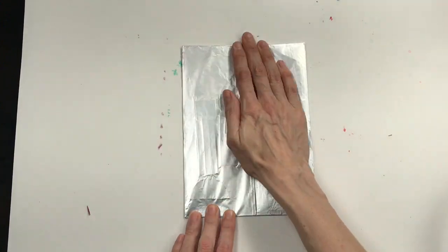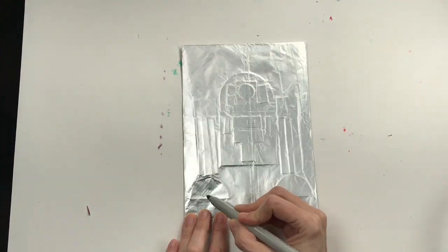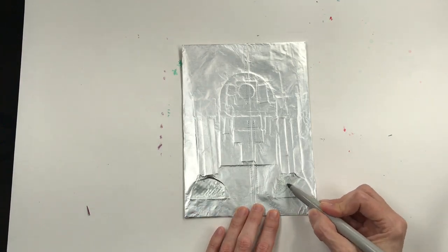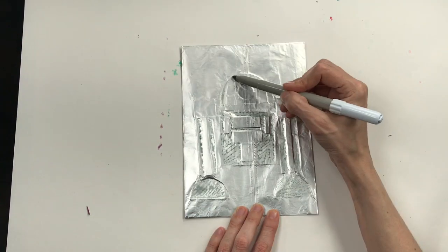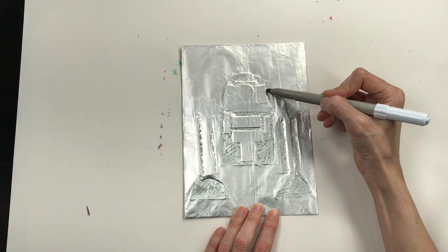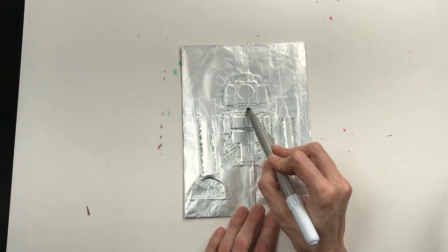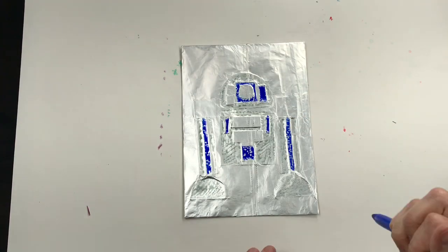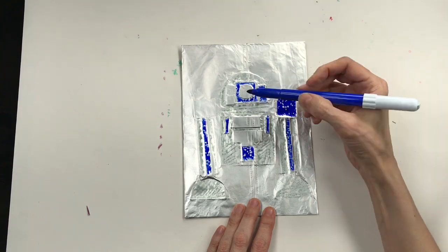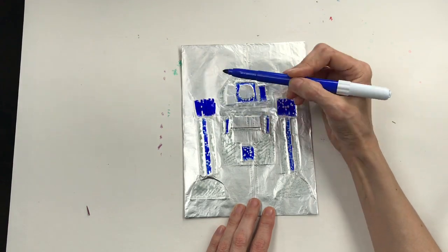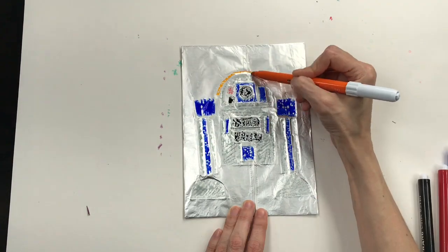Alright, grab those markers because now we're going to color. It's important that you're using water-based, otherwise known as coloring markers, for this step. You won't want to use permanent markers. Here's why. We're going to be pulling a print. In order to pull a print, we need these markers to be water-based because we'll be using water to pull the print from the plate.